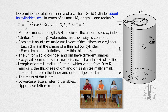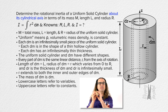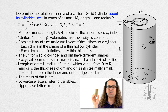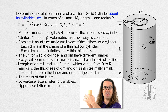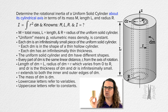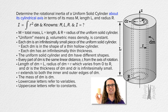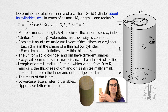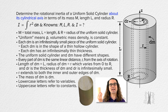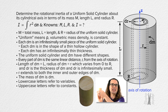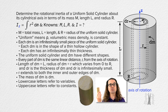What does 'about its cylindrical axis' mean? We are determining the rotational inertia of a uniform solid cylinder about its cylindrical axis — that means we are determining the rotational inertia, or resistance of the cylinder to angular acceleration, if we rotate it about the axis of the cylinder. I have labeled that cylindrical axis as the z-axis in the diagram and added a subscript of z to our rotational inertia equation to indicate we are determining the rotational inertia about the z-axis.